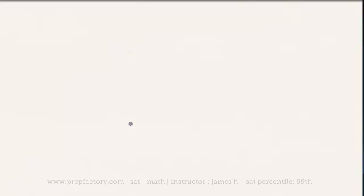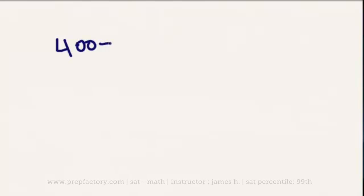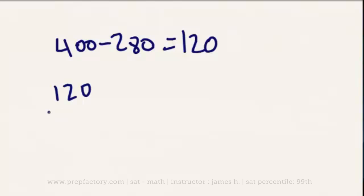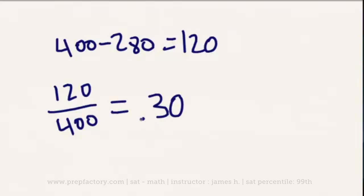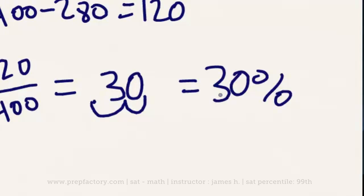The question reads: a $400 television is on sale for $280. By what percent is this television discounted? Since it's asking for the discount percentage, we divide the discount by the original price. The discount is $400 minus $280, which equals $120. So we do $120 over $400, which gives us 0.30 — moving the decimal two places gives us a 30% discount from the original price.